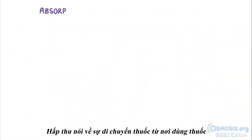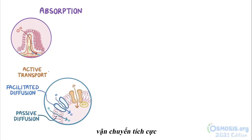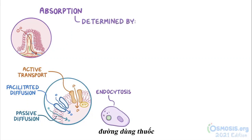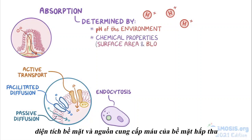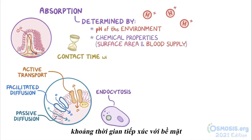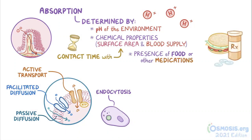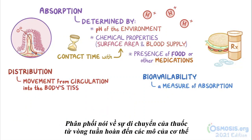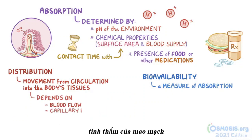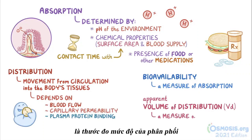As a quick recap: absorption refers to the movement of medication from the site of administration into the circulation. It can occur through passive diffusion, facilitated diffusion, active transport, and endocytosis, and is determined by the route of administration, the pH of the environment, the chemical properties of the medication, the surface area and blood supply of the absorptive surface, the amount of contact time with the absorptive surface, and the presence of food or other medications in the gastrointestinal tract. Bioavailability is a measure of absorption. Distribution is the movement of a medication from the circulation into the body's tissues, which depends on blood flow to tissues, capillary permeability, and plasma protein binding. The apparent volume of distribution is a measure of the extent of distribution.